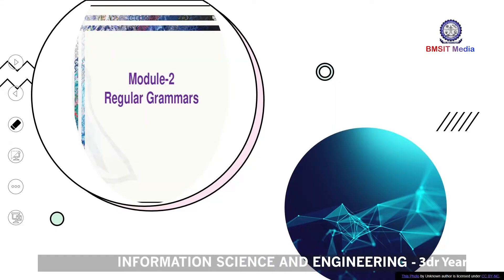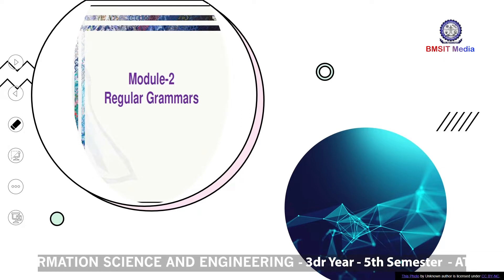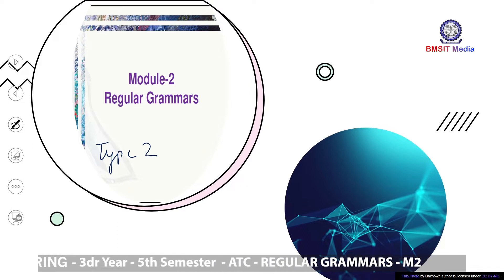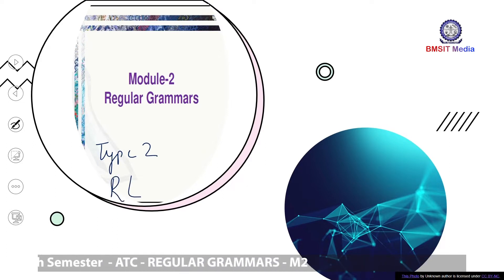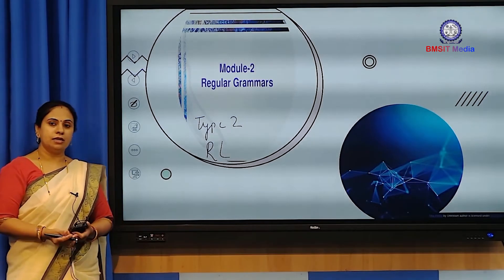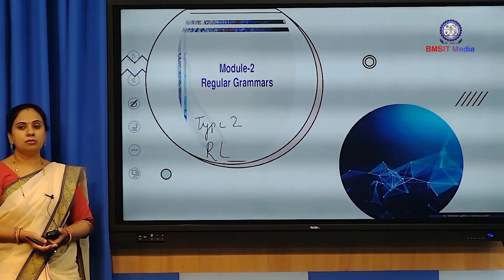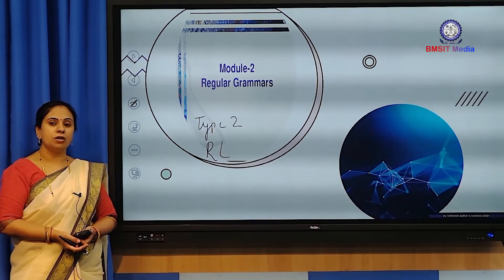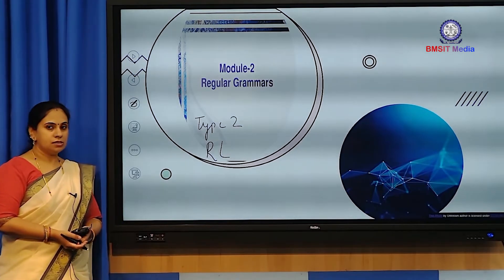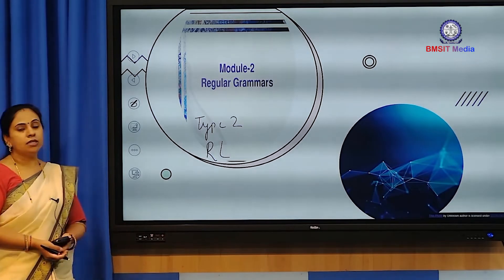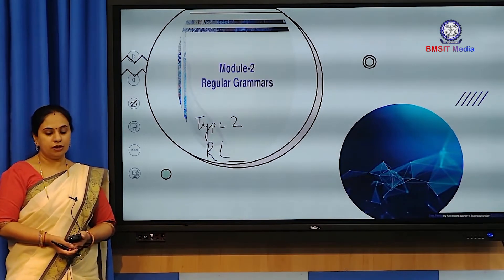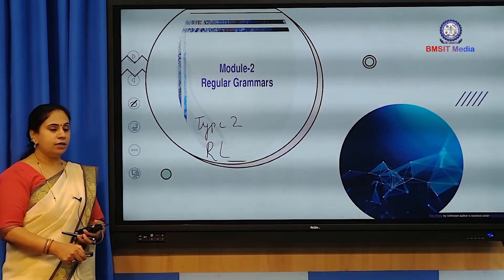Regular languages generally fall in the category of Type 2 language. Just the way we have grammar in order to recognize the English language, something similar exists for mathematical models as well. So today we will see what is regular grammar. The regular language which is defined can be written in terms of regular grammar.